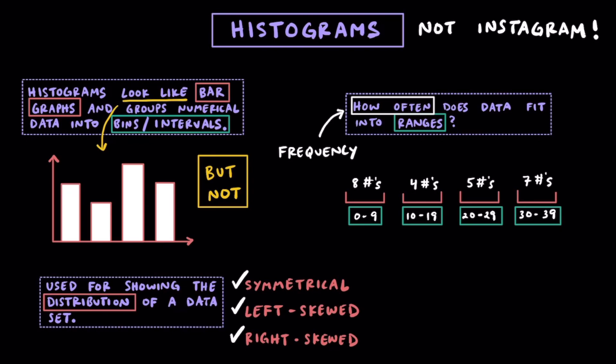The bins that have more numbers in them have a higher frequency, and the bins that have less numbers have a lower frequency.